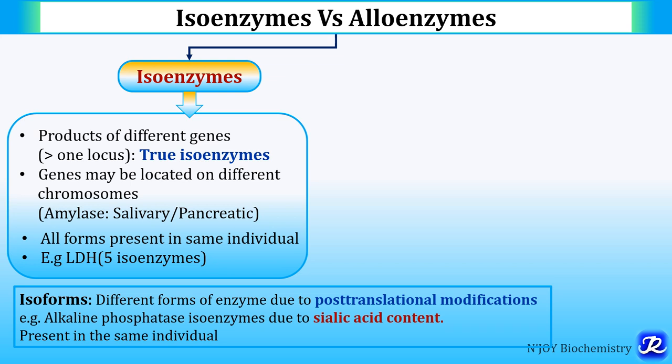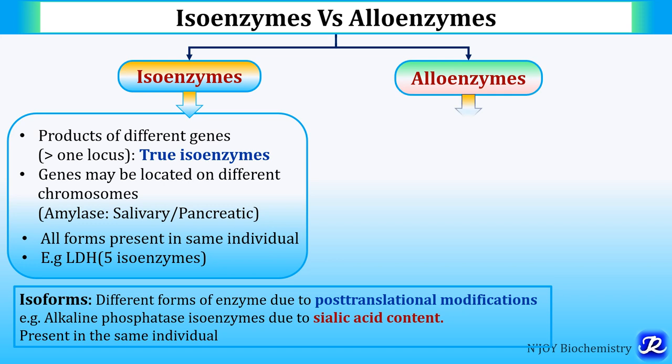What is an isoform? The different forms of an enzyme due to post-translational modification — after the enzyme is synthesized, post-translational modification produces different isoforms. For example, alkaline phosphatase has 6 isoforms due to its sialic acid content, and all forms are present in the same individual.